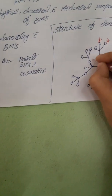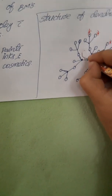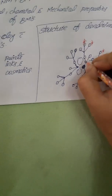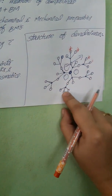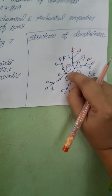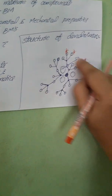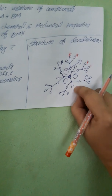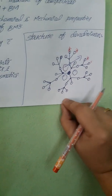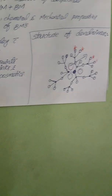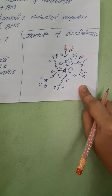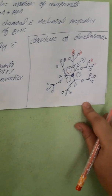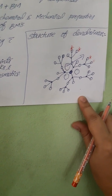Dendrimers also have interior cavities — interior space. We can add the required drug molecule, or active pharmaceutical ingredient, to these interior cavities for further applications. When we administer drug-filled dendrimers into the body, they go and act on a specific site of action, on a specific cell. Dendrimers are normally used in targeted drug delivery systems, mainly in cancer therapy or tumor-targeted drug delivery systems.